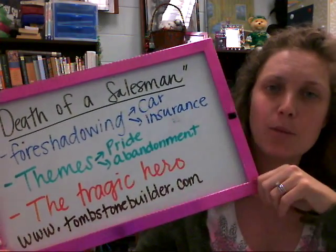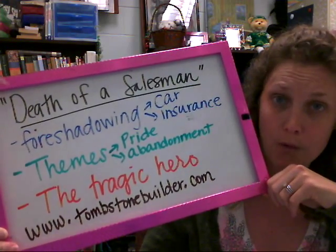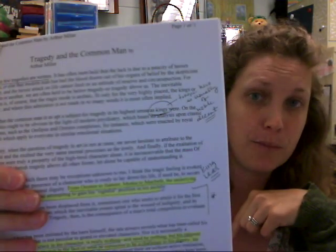Another item we want to study with Death of a Salesman is the tragic hero. I have provided a link in this week's folder regarding the tragic hero, and I really want you to read the article called Tragedy and the Common Man by Arthur Miller. What Arthur Miller aimed to do is write a tragedy in modern times. The tragic hero is often involved in Shakespearean literature — think of King Lear, Hamlet, Medea, Macbeth. Miller wanted to modernize the element of the tragic hero and wrote Willie Loman as a tragic hero.